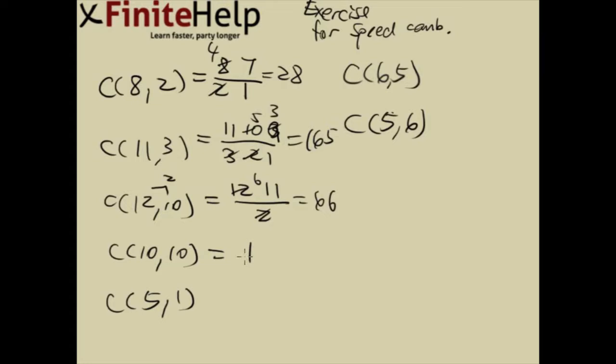Anything choose itself is always 1. Anything choose 1 is always itself. Anything choose 1 less than itself is always itself.